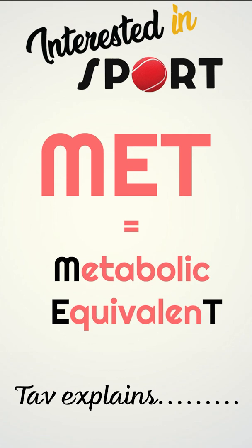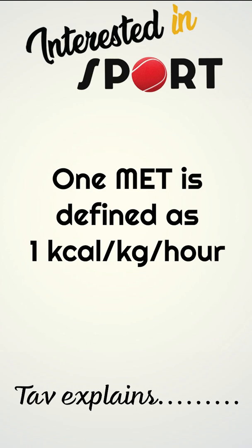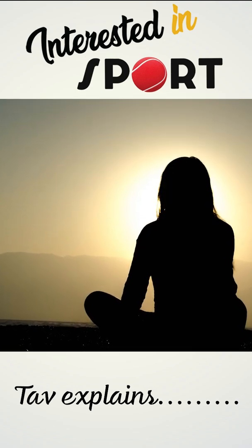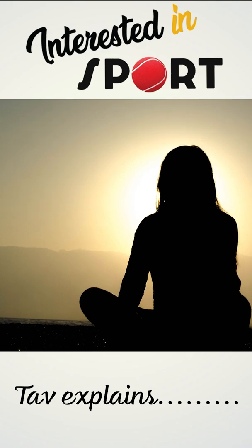The MET, or metabolic rate of task, is the measure of the ratio of the rate at which a person expends energy relative to the mass of that person while performing physical activity. One MET is defined as one kilocalorie per kilogram per hour and is roughly equivalent to the energy cost of sitting quietly.